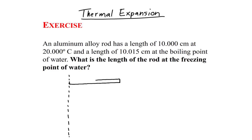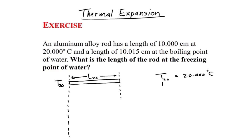Let's start with a picture of our rod at its different temperatures and lengths. At 20 degrees Celsius the rod is 10 centimeters long. We will define T20 as the temperature at 20 degrees Celsius and L20 as the length of the rod at 20 degrees Celsius, which is 10.000 centimeters.